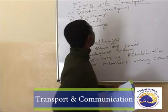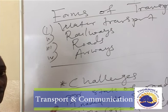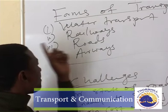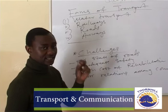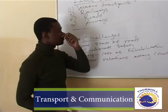The first form is water transport, which is the cheapest form of transport for long distance. The second form is railways, which is also one of the cheapest within the country. In Zambia, we have the TAZARA — the Tanzania Zambia Railway Authority.